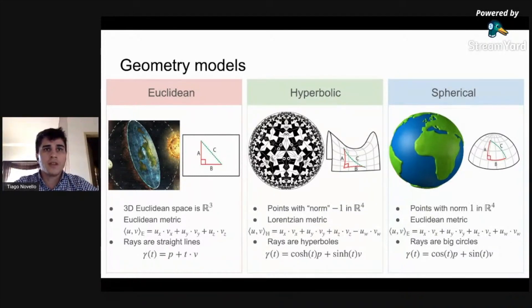On the left, the Euclidean space is the three-dimensional vector space endowed with the classical inner product. Rays in these geometries are straight lines, and as everyone knows, the sum of the inside angles of any triangle is 180 degrees.